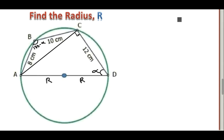In triangle ABC, if this is the angle at vertex C — angle C — then the opposite side is denoted by small c. The angle at vertex A, angle A, has the opposite side denoted by small a, which is side BC. The angle at vertex B is 180 minus alpha, and its opposite side is denoted by small b.